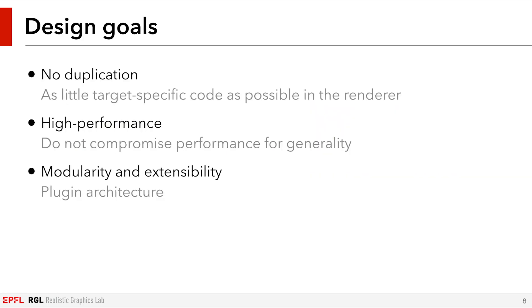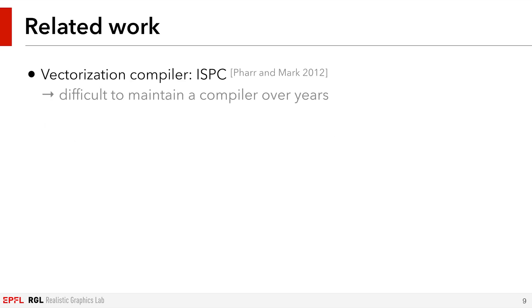When designing this system, we had a few goals and requirements in mind. Despite supporting multiple features and targets, we want to have as little code duplication as possible. Likewise, we don't want to sacrifice performance for this generality. Mitsuba 2 is a platform for research, so we want it to be modular and easy to extend. This turns out to be one of the most challenging aspects of the project.